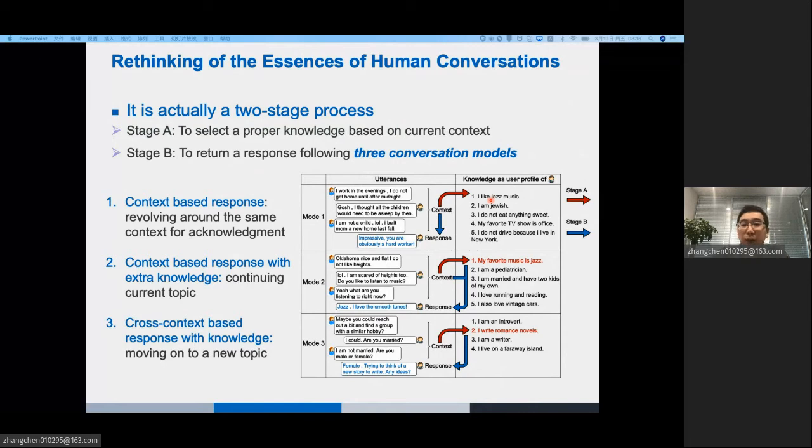Mode 1, context-based response. The response follows the dialogue context, but uses no extra knowledge. Mode 2, called context-based response with knowledge. The response follows the context, but uses the extra knowledge that is complementary to current topic. And mode 3, called cross-context-based response with knowledge. The response follows the context, but switches to a new topic and uses the new knowledge that is related to the new topic. As far as we know, there is no research that focuses on modeling the mode 3.